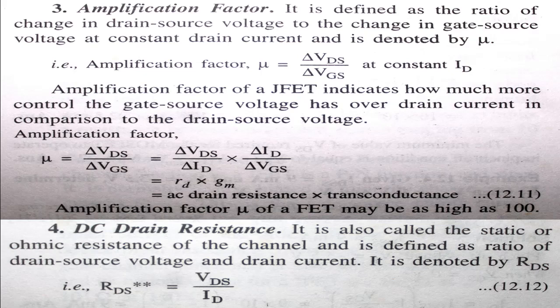DC drain resistance: it is also called static or ohmic resistance of the channel. It is defined as the ratio of drain-source voltage to drain current, denoted by rDS, where rDS = VDS / ID.